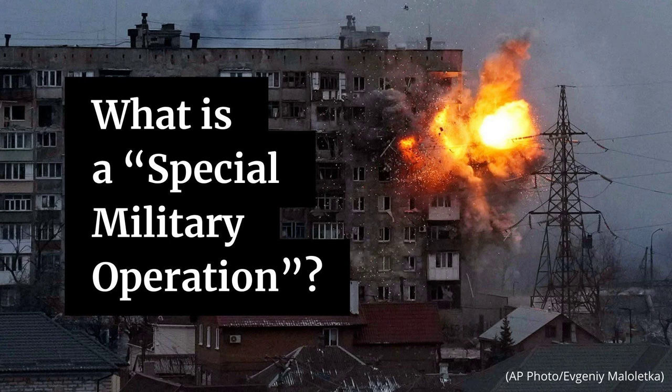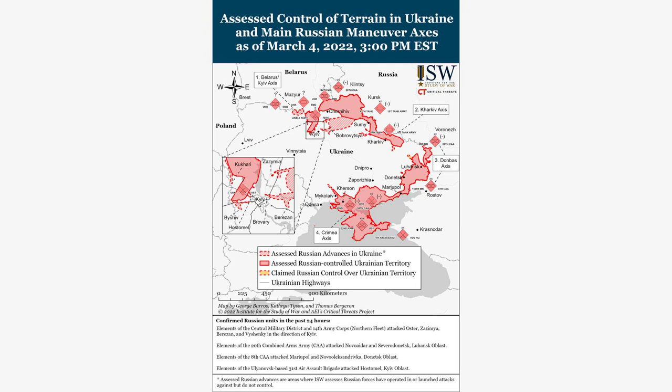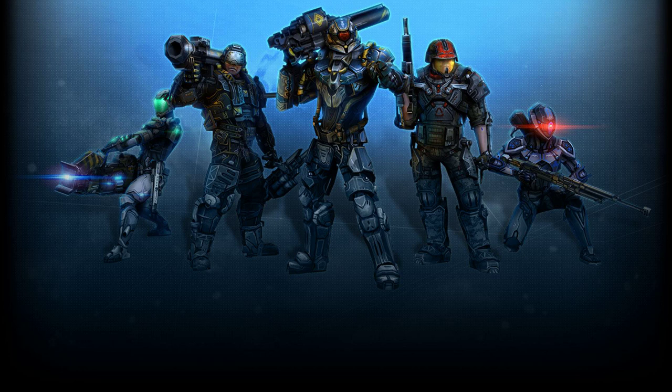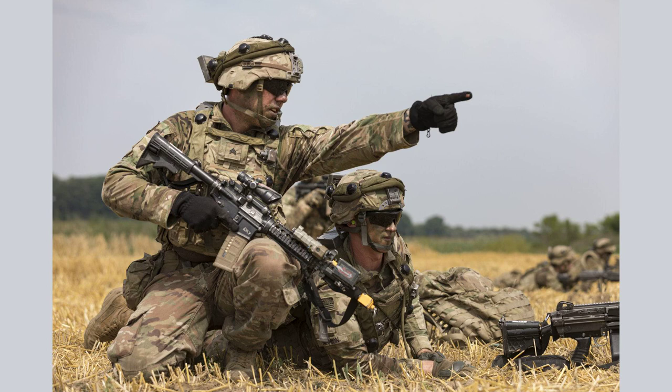This allowed for the safe conduct of ground operations and the protection of coalition troops. On the ground, the coalition forces launched a massive ground offensive to liberate Kuwait and push Iraqi forces out of the country. The ground campaign, known as Operation Desert Sabre, involved a combination of armored units, infantry, and special forces. The coalition forces employed a strategy of overwhelming force, utilizing their superior firepower and mobility to swiftly advance through Iraqi defenses. They employed a combination of tanks, artillery, and infantry to engage and neutralize Iraqi forces.